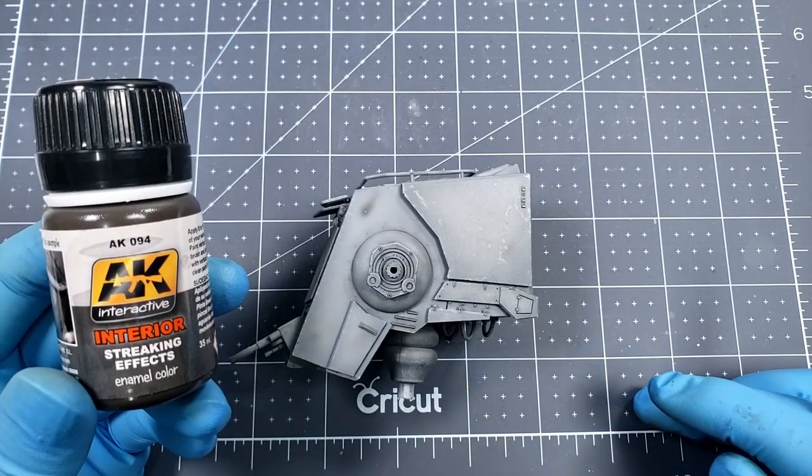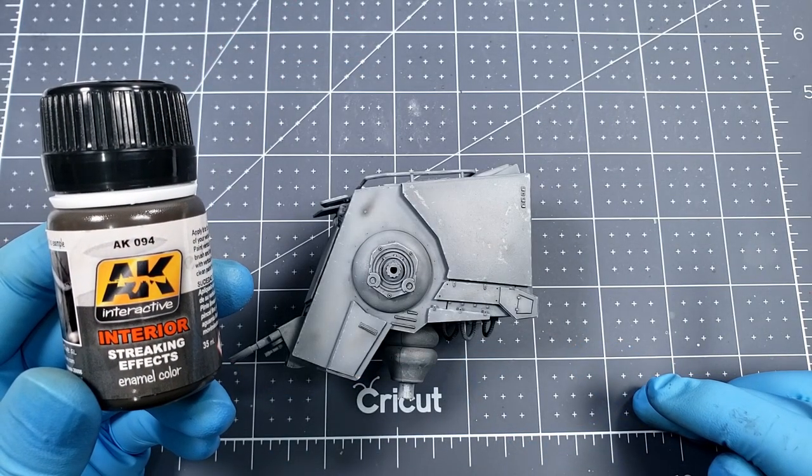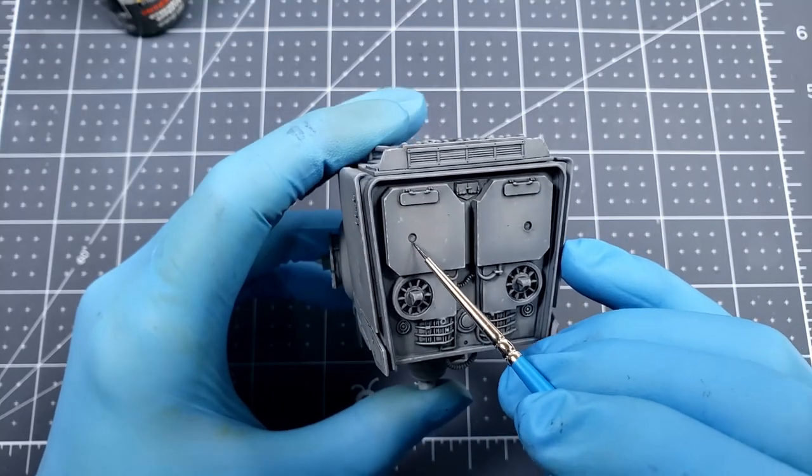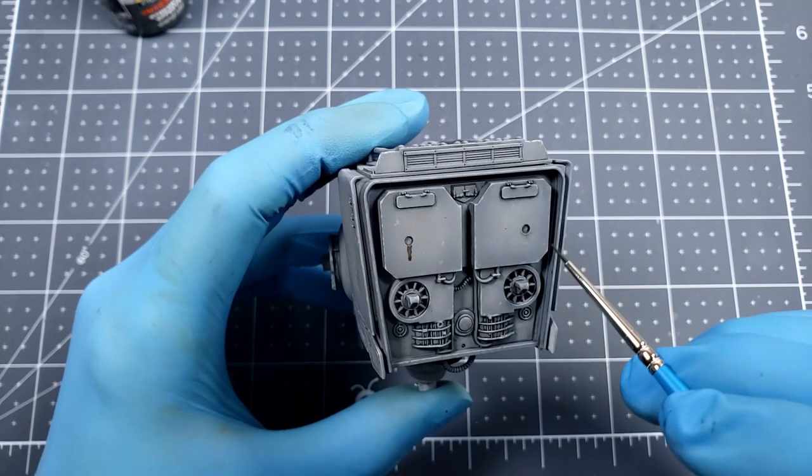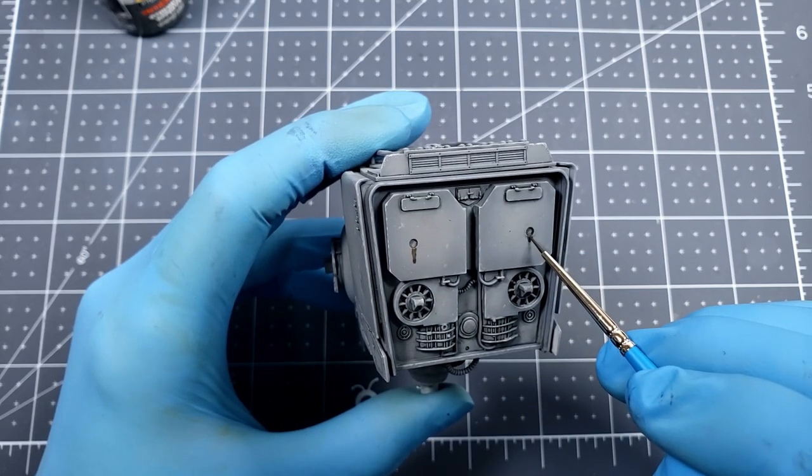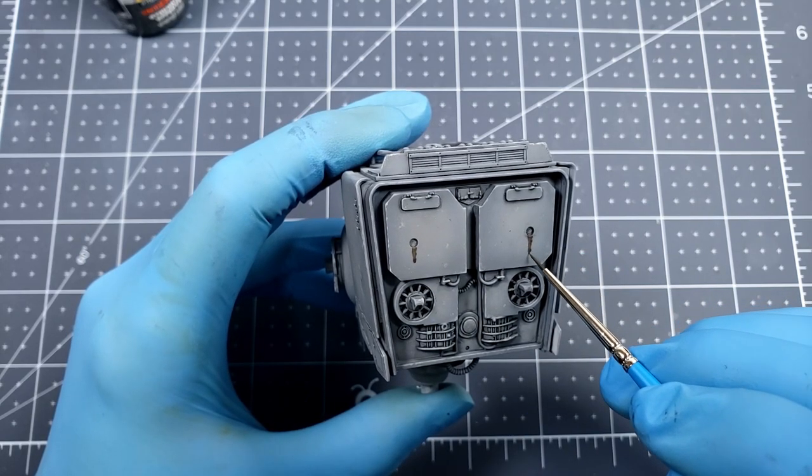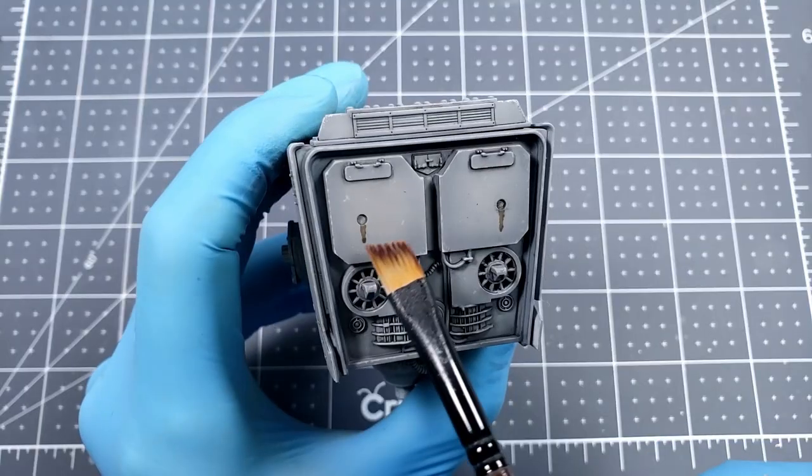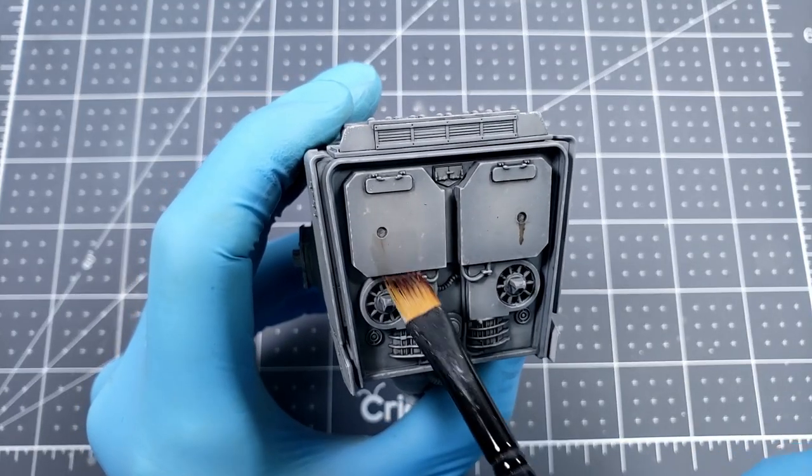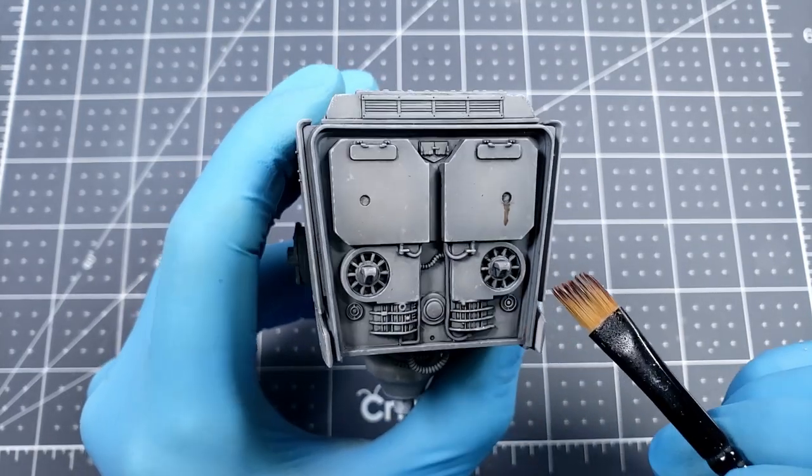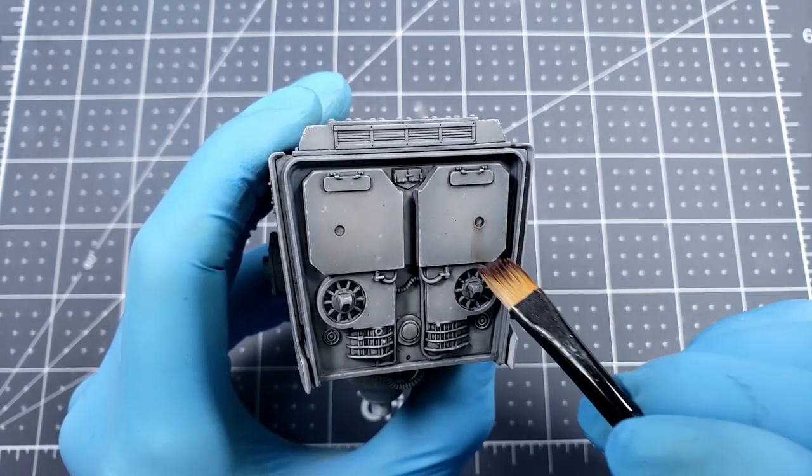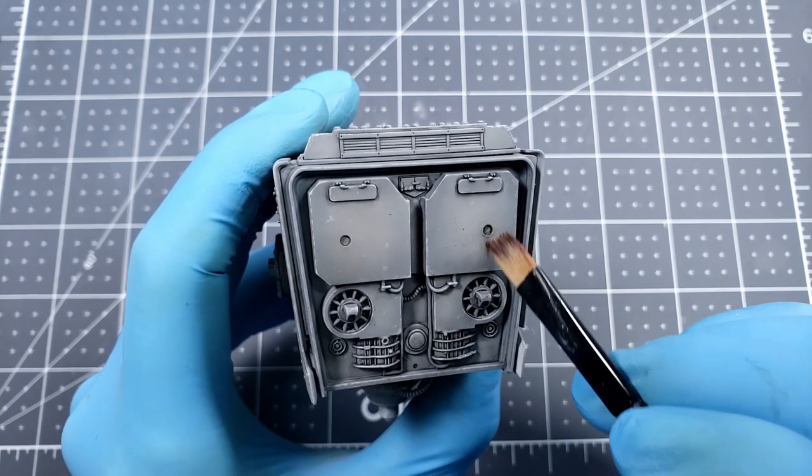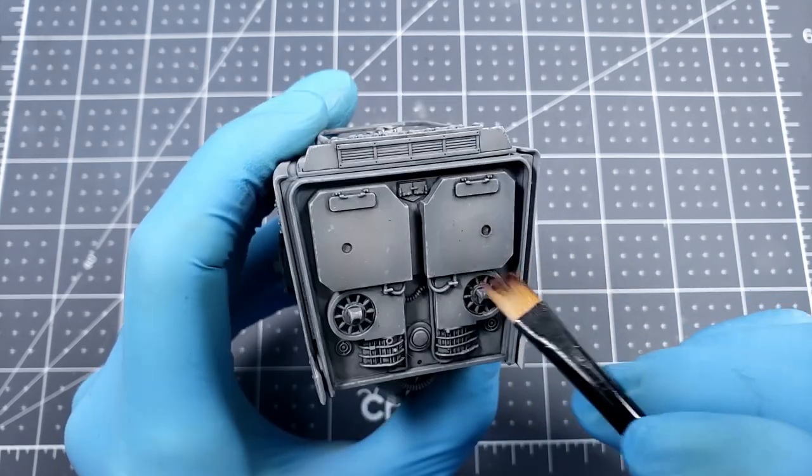Next up was the part I was looking forward to the most, streaking grime. For this I'm using AK Interactive's interior streaking effects. Just like the pin wash it is an enamel based product so I'll be applying it and then removing it selectively in order to get the effect that I'm looking for. It did take me a couple of attempts to dial in how much to remove. I did want this effect to be more subtle instead of having big huge streaks but I ended up taking off way too much to begin with and had to reapply.